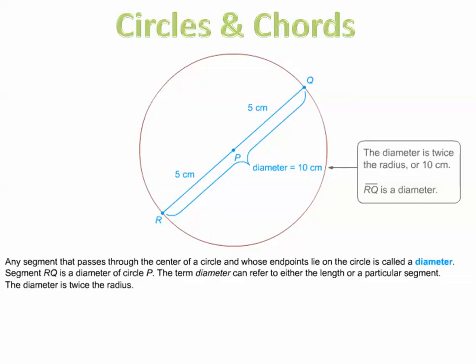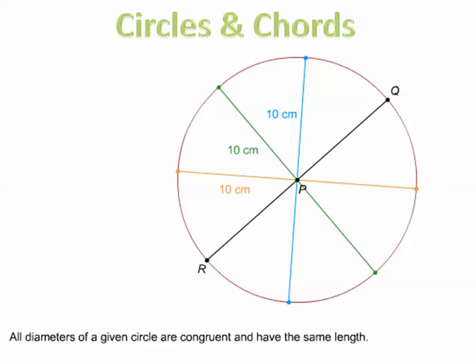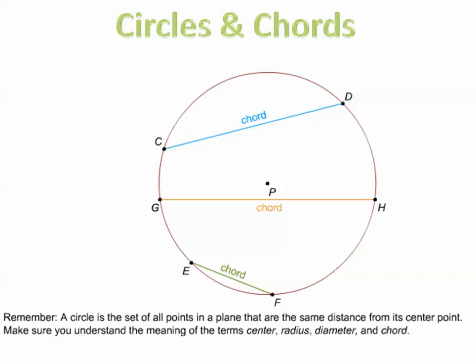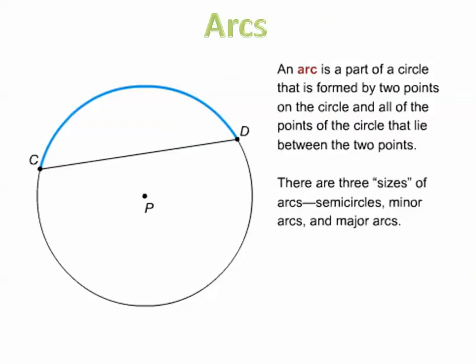The diameter is twice the radius — so if the radius is 5, the diameter is 10. All diameters of a given circle are congruent. Any segment joining two points on a circle is called a chord; for example, segments CD, GH, and EF are all chords. A diameter is a special chord that passes through the center. When a chord passes through the center we call it a diameter, not a chord. Be sure you understand the terms center, radius, diameter, and chord.